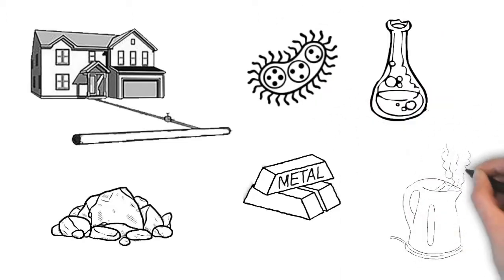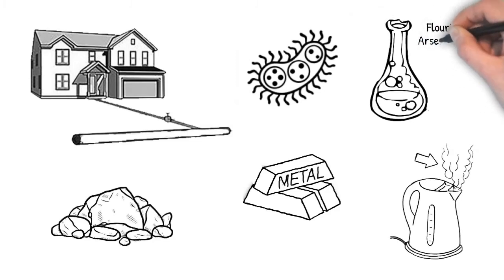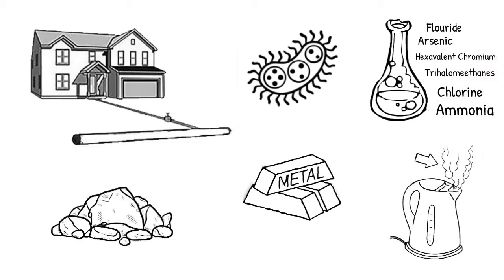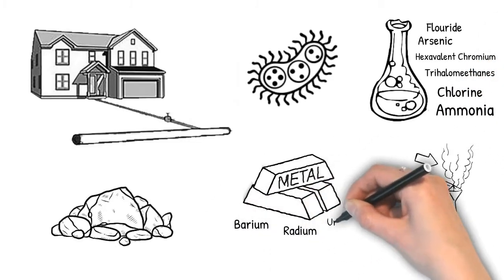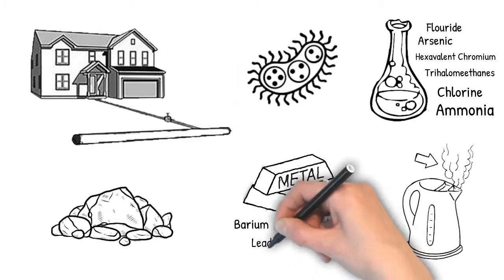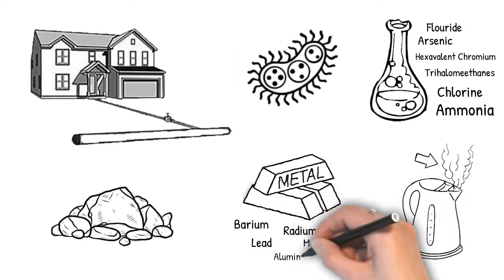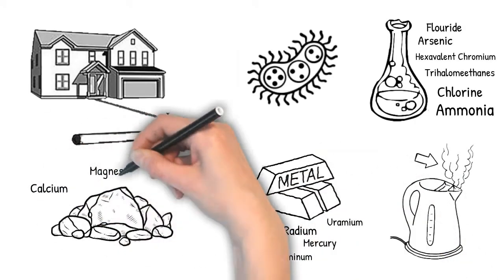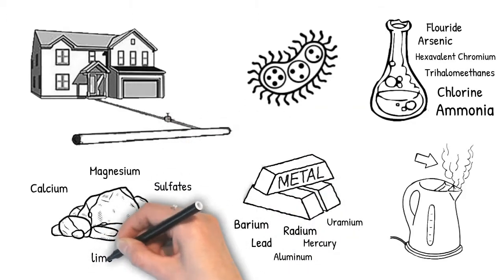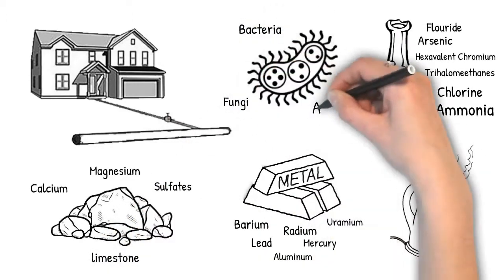Pollutants like fluoride, arsenic, hexavalent chromium or the Erin Brockovich chemical, trihalomethanes, chlorine and ammonia, barium, radium, uranium, lead, mercury and aluminum, calcium, magnesium, carbonates, sulfates and limestone, harmful bacteria, fungi and algae which live and thrive in the very tap water we drink.